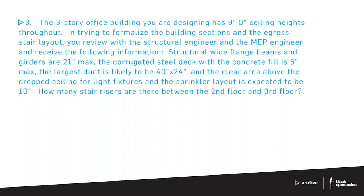Question three: A three-story office building has nine-foot ceiling heights throughout. In trying to formalize the building sections and egress stair layout, you review with the structural and MEP engineers and receive the following information: structural wide flange beams and girders are 21 inches max; corrugated steel deck with concrete fill is about five inches max; the largest duct is likely 40 by 24; and the clear area above the drop ceiling for light fixtures and sprinklers is about 10 inches. How many risers are there between the second and third floors?